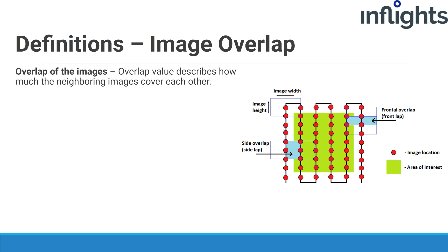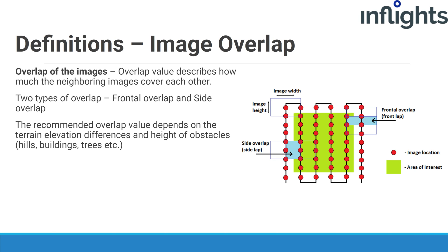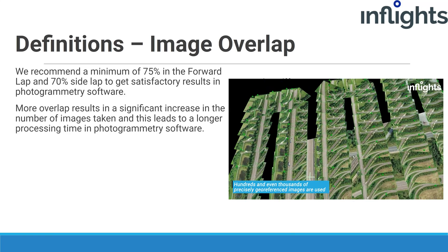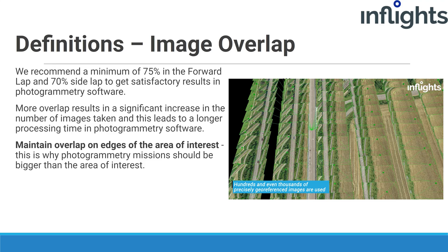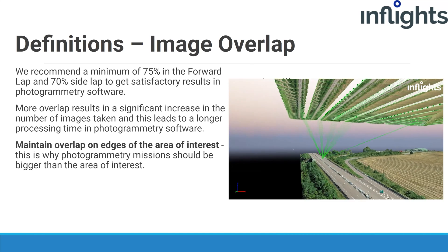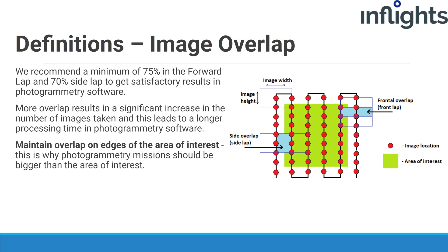Now let's talk about image overlap. Overlap describes how much neighboring images cover each other. There are two types: frontal overlap and side overlap. The recommended overlap value depends on terrain elevation difference and height of obstacles like buildings or trees. The higher the overlap value, the better accuracy can be achieved. We recommend a minimum of 75% forward overlap and 70% side overlap for satisfactory photogrammetry results on flat terrain. More overlap significantly increases the number of images and processing time. It's important to maintain overlap on the edges of the area of interest, so photogrammetry missions should be larger than the area of interest.